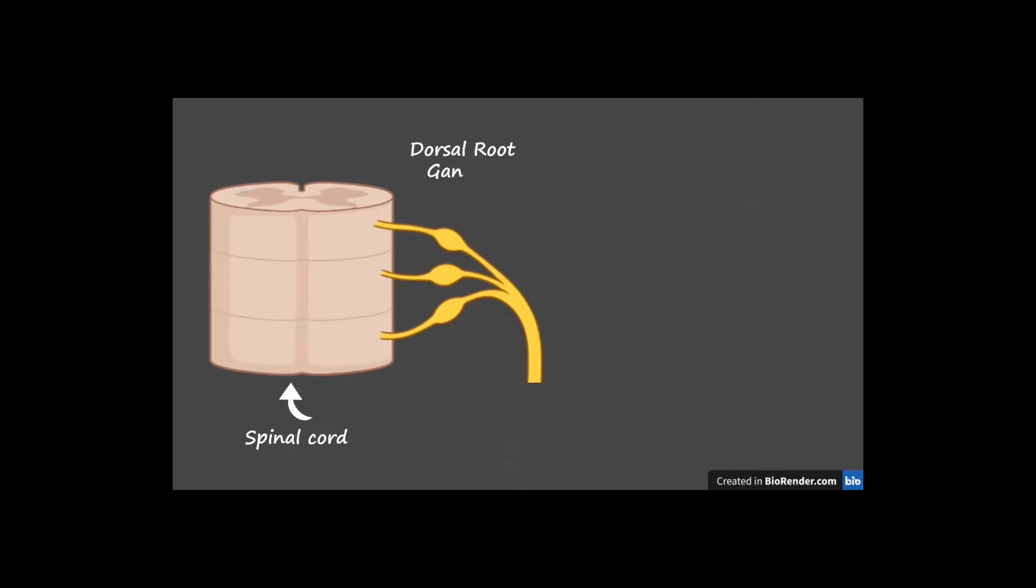Dorsal root ganglia, which is their official name, are part of the peripheral nervous system. The signal is transferred from the periphery to the dorsal root ganglia, then to the spinal cord, and finally up to the brain.